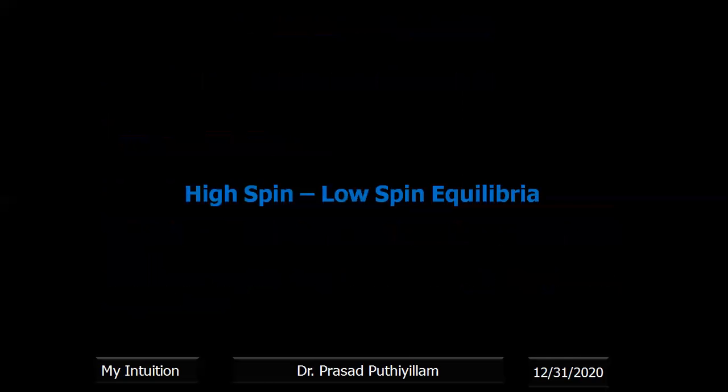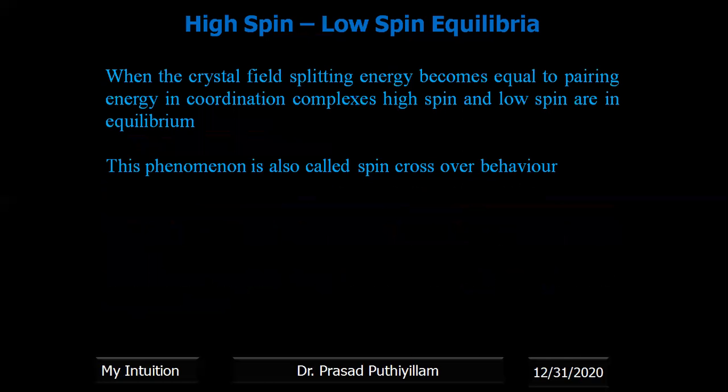The second topic is high spin and low spin equilibria. This topic was already discussed in previous classes of this coordination complex series — that is spin crossover behavior. When the crystal field splitting energy delta becomes equal to the pairing energy of the electrons, in such coordination complexes the high spin state and low spin states are in equilibrium.